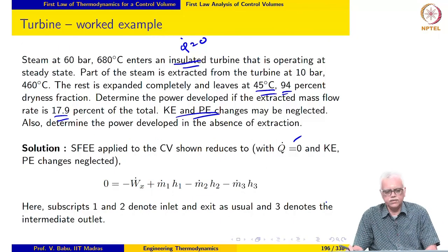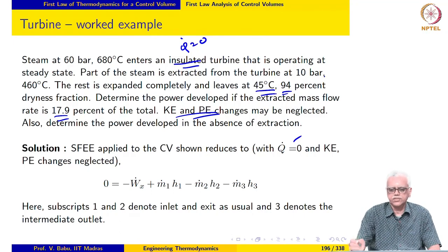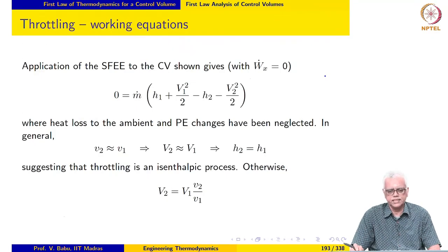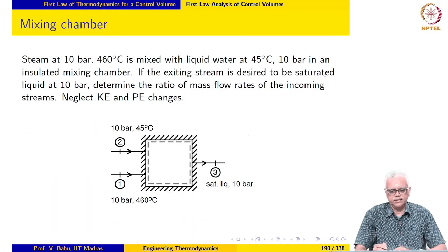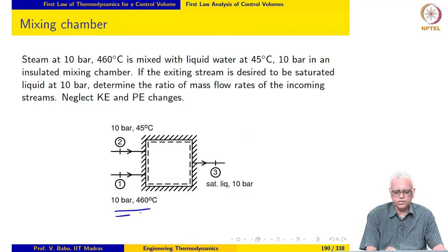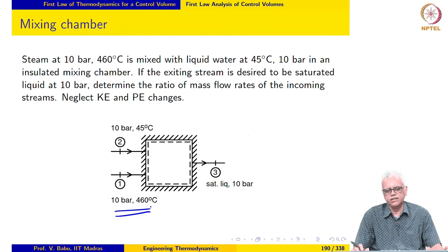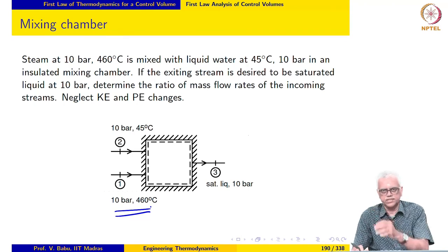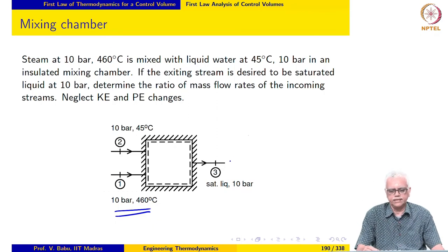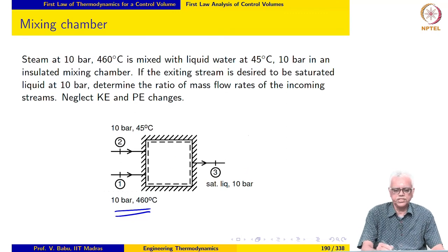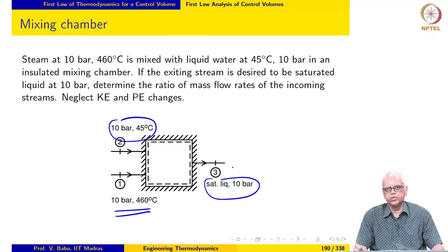In many power plants, some steam is extracted for other purposes. In this case, the steam extracted at 10 bar, 460 degrees Celsius is the same state as the steam entering the mixing chamber in our earlier mixing chamber example — this is intentional, to demonstrate what is done with extracted steam. Although you lose some power when you extract steam from a turbine, that steam is used for heating other liquids in a mixing chamber, where it is mixed with compressed liquid and leaves as a saturated liquid at high temperature — so you lose some power but gain something else.